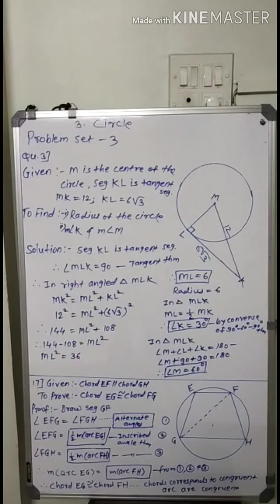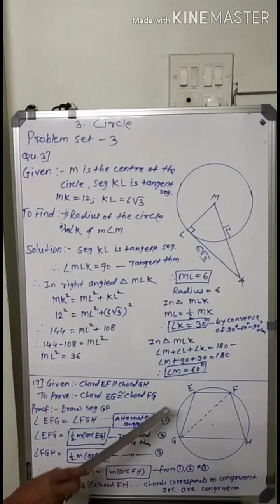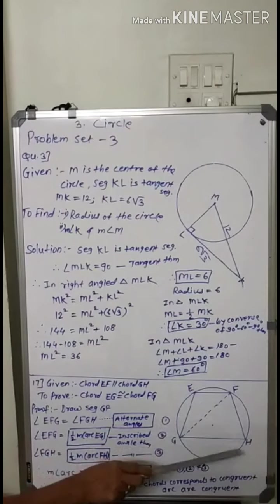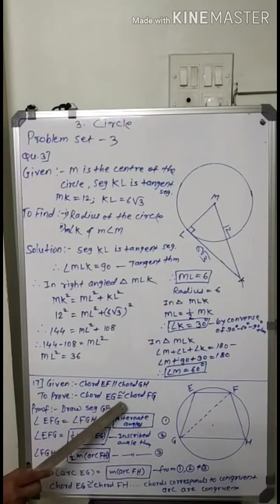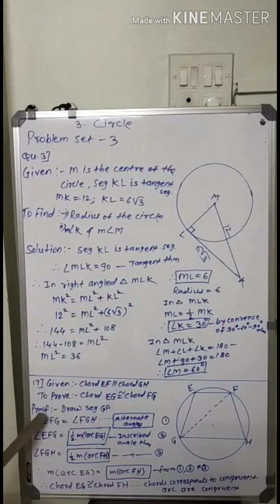Now example number 17. In the figure, chord EF parallel chord GH. It is given and we have to prove chord EG congruent chord FH. Given chord EF parallel chord GH, and to prove chord EG congruent chord FH. For that purpose we have to draw segment GF.